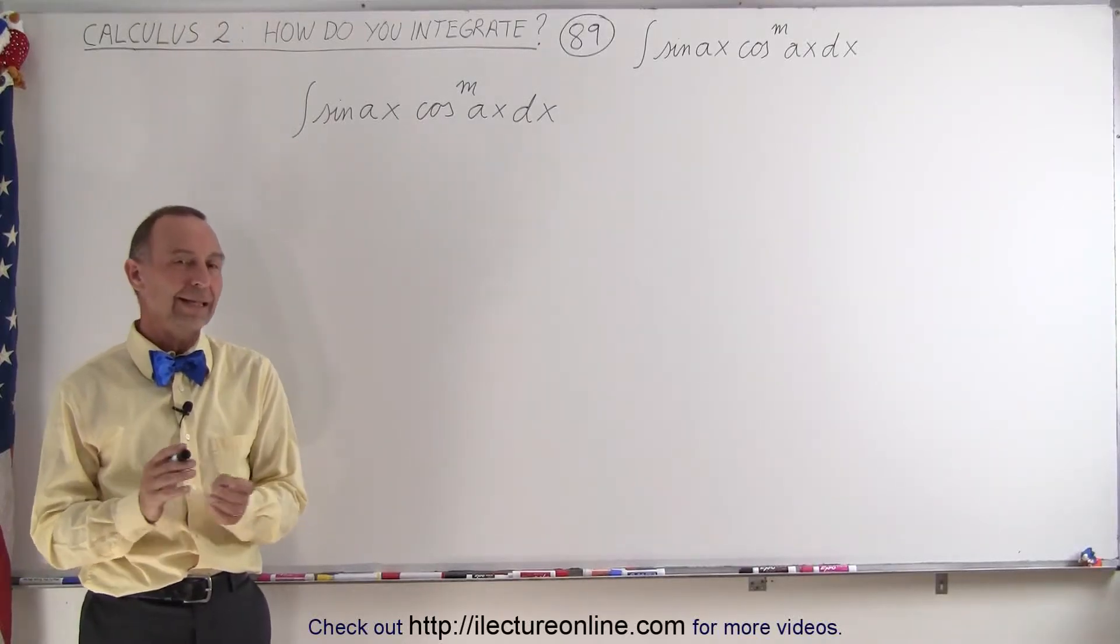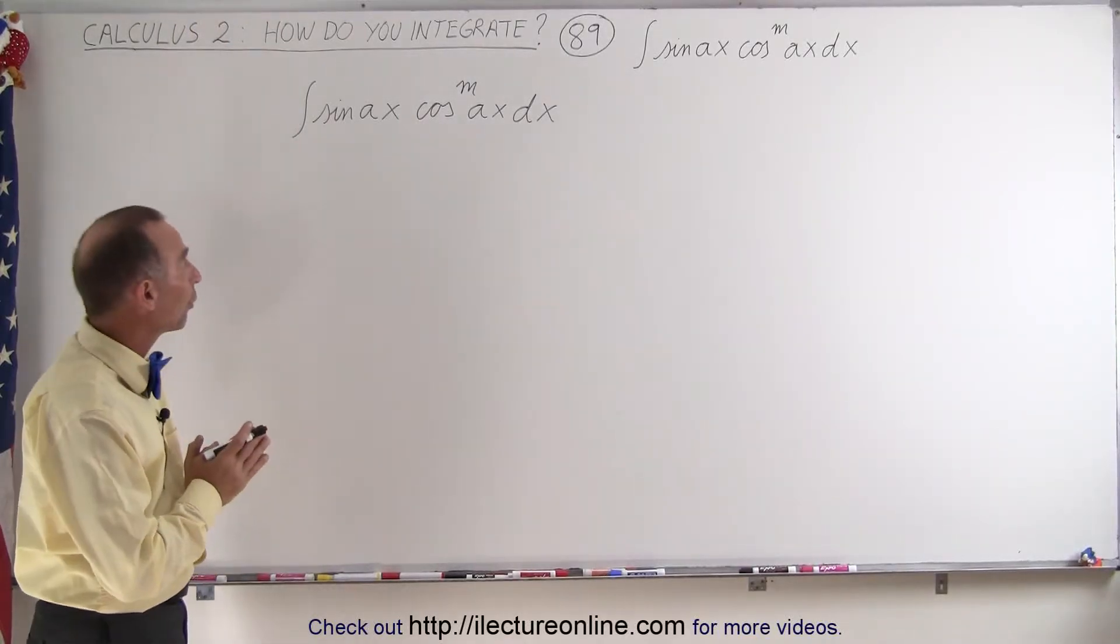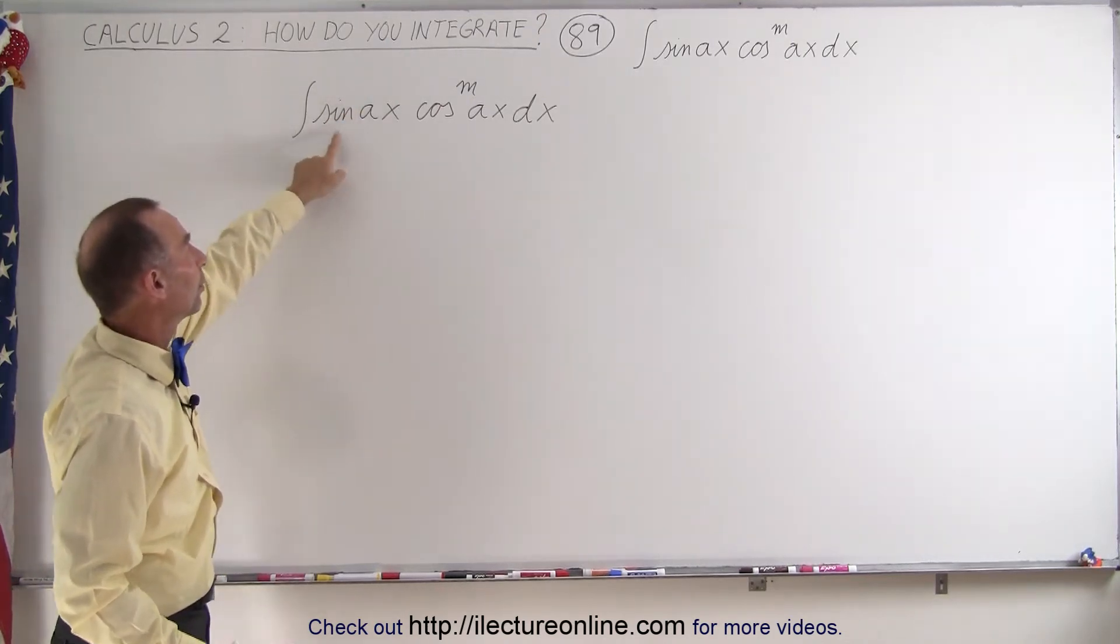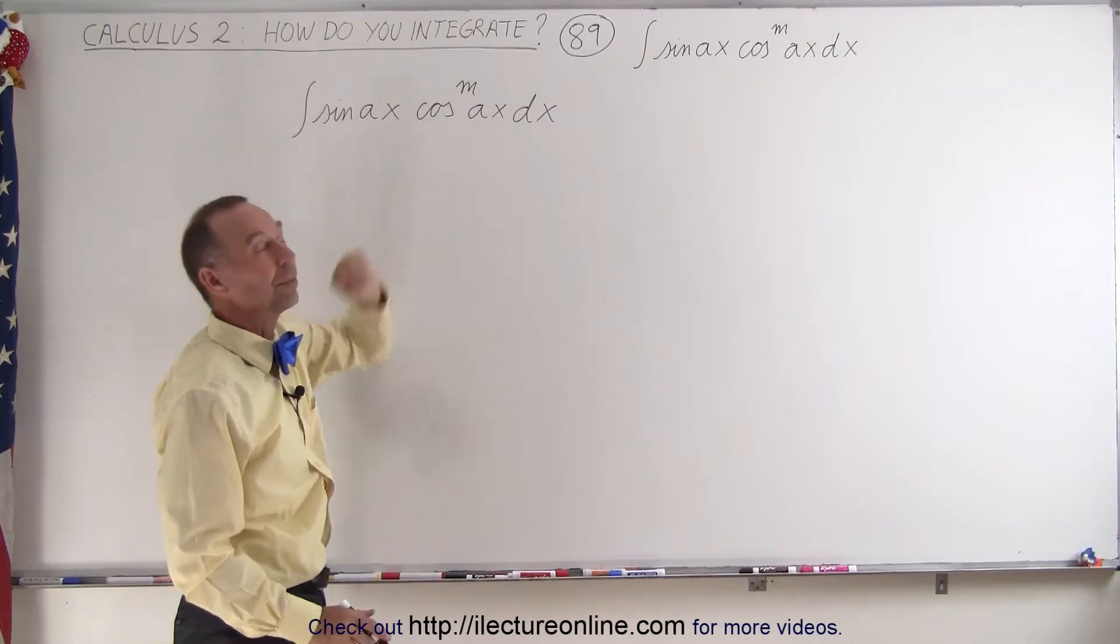Welcome to ElectronLine. Again, very similar to what we've done before, except in this case the sine is not raised to an exponent, but the cosine is raised to a random exponent.